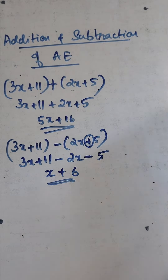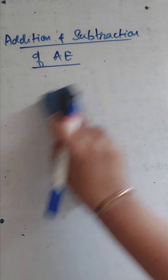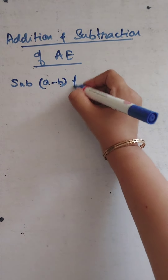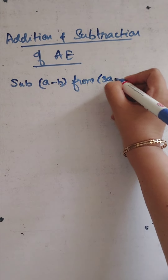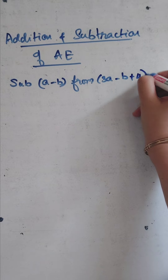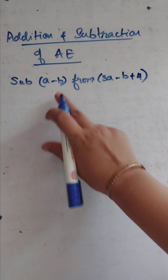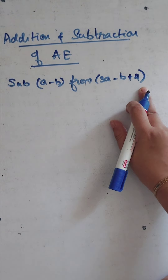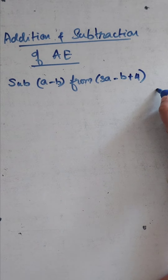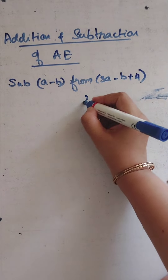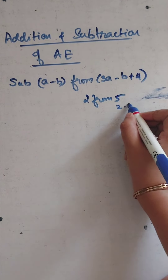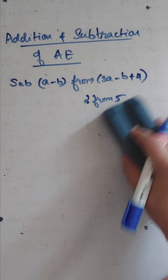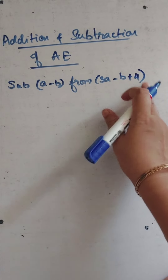Now let's see another example: subtract (a minus b) from (3a minus b plus 4). How do you write this? Think of it like 'subtract 2 from 5' — you write 5 minus 2, not 2 minus 5. Similarly, 'subtract (a minus b) from (3a minus b plus 4)' means you write (3a minus b plus 4) minus (a minus b).